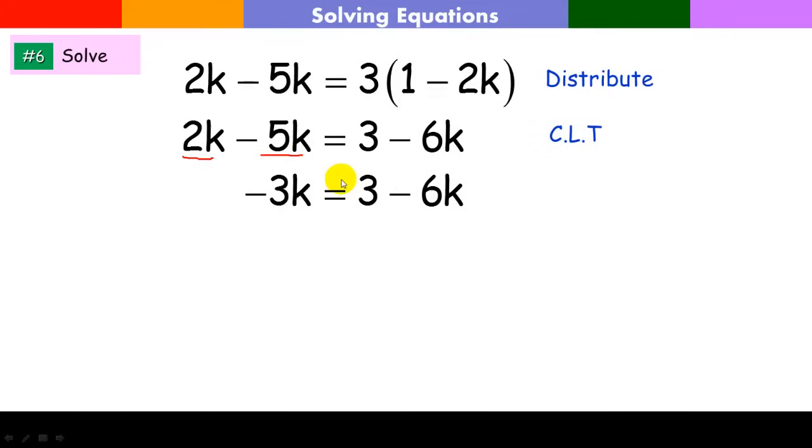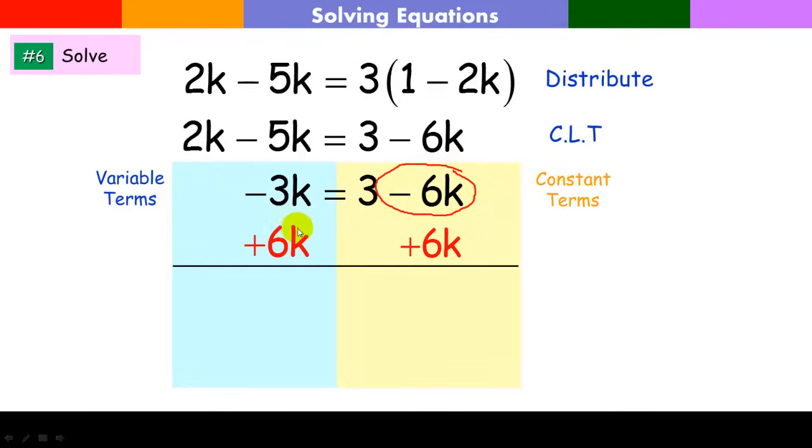Now I'm to where I want to make some decisions. I look at my coefficients and I notice which one is larger, negative 3 or negative 6. Actually, negative 3 is larger, so I want to put my variable terms on the left side and my constants on the right. This is a variable term, he's okay here. I have to get rid of this guy, so I'm going to add 6k to this side and to this side as well. You have 3k equals 3. Divide both sides by 3. K equals 1. That's our six problems. I look forward to seeing you in class with any questions that you may have.